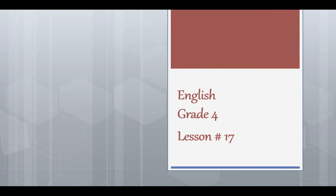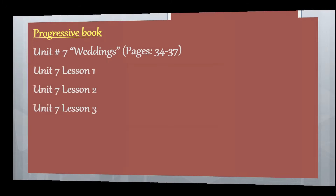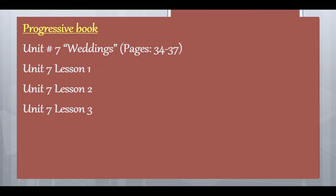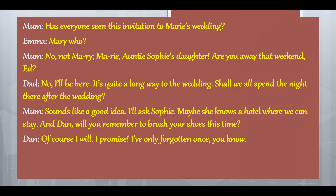Assalamualaikum. This video is for Class 4, subject is English, and this is our 17th lesson. Today we'll do Unit Number 7 — Weddings — from the English Progressive Book, pages 34 to 37. We're going to cover Lesson 1, Lesson 2, and Lesson 3. So let's start.